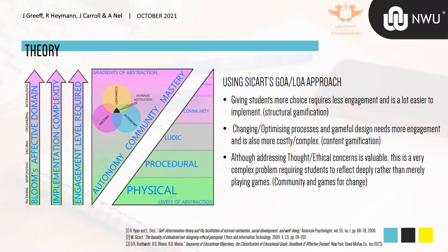As you go up these levels of abstraction, implementation complexity increases. There's also a level of engagement required from students. For physical things, little engagement is needed since the system does it automatically. For community, you need to actively put things in to get value out. For mastery or ethics, a great deal of engagement is required in how you interact with the system.